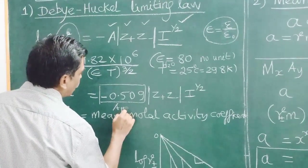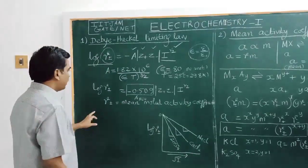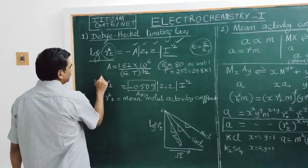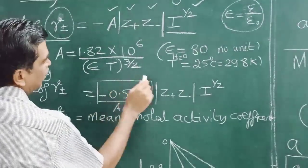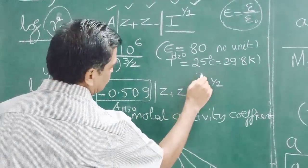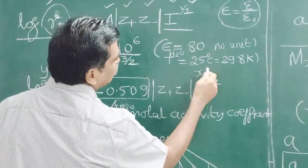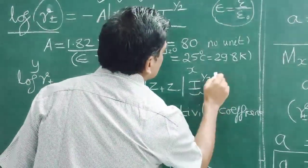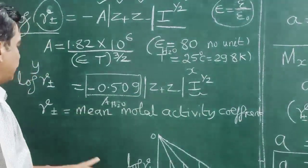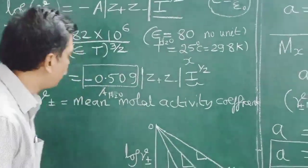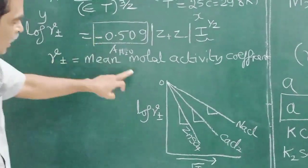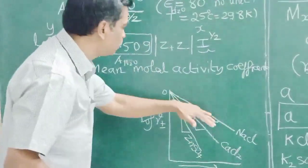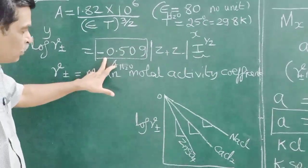This equation can be plotted — it is a straight-line equation. Taking log gamma± as y and I^(1/2) as x, you get a straight line. Because of the negative sign, the slope is negative — it will have a negative slope as opposed to a positive one.